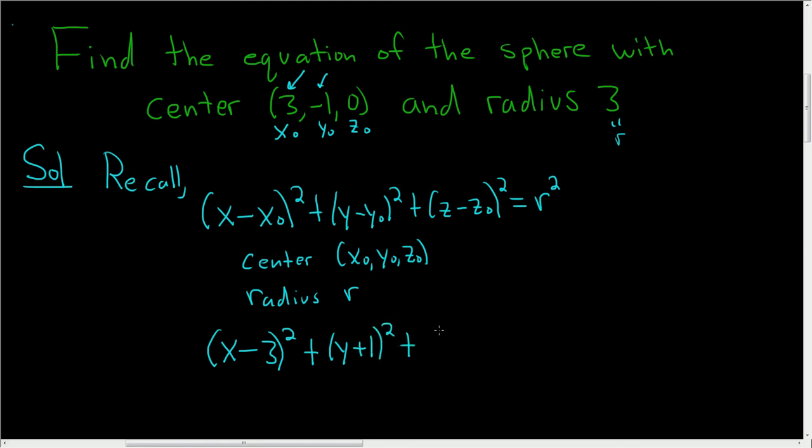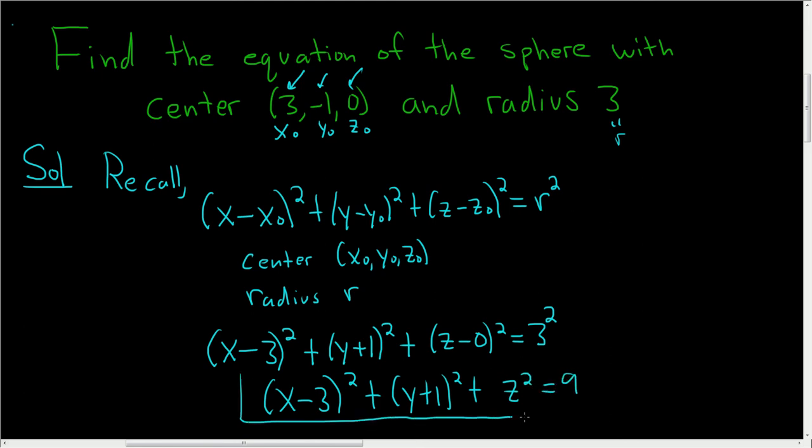Plus z minus, well, z₀ is 0, so z minus 0 squared. And r is 3, so we get 3 squared. We could clean this up. Let's go ahead and do it. So (x - 3)² + (y + 1)² + z² = 9. And that is the equation of the sphere.